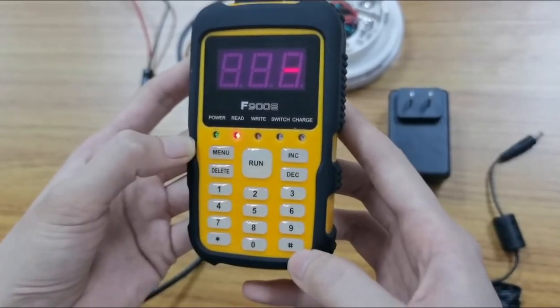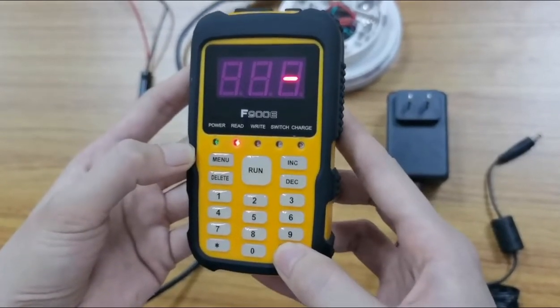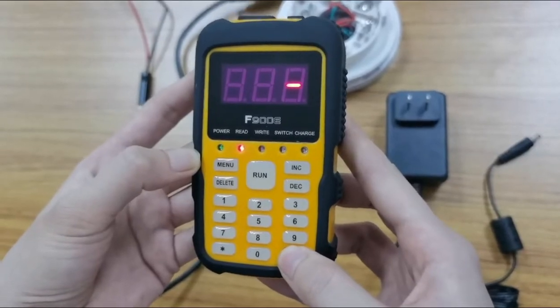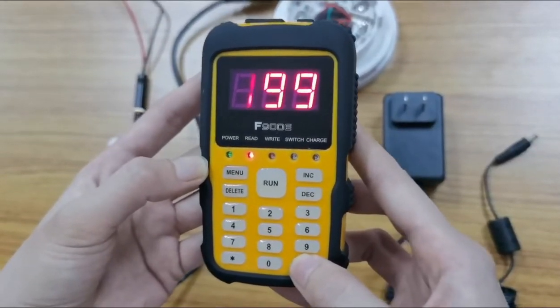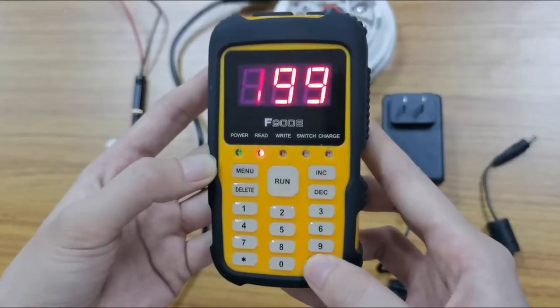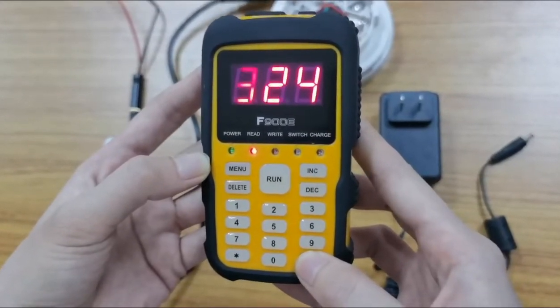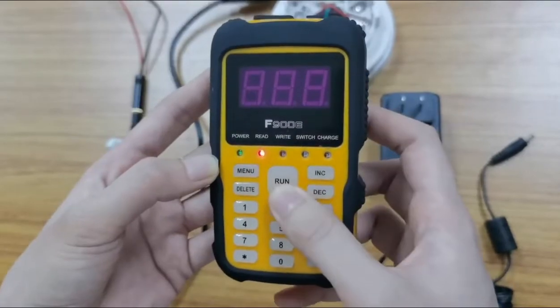First you need to switch the mode because our FP300 is 324 devices, you need to change this and then run.